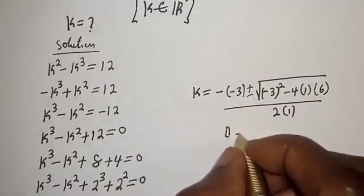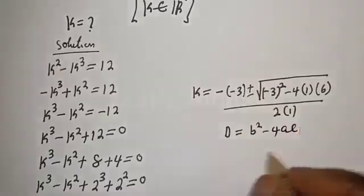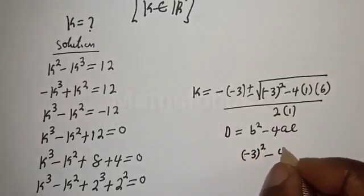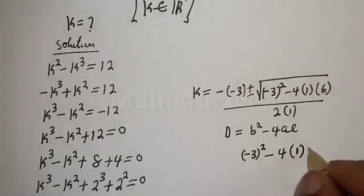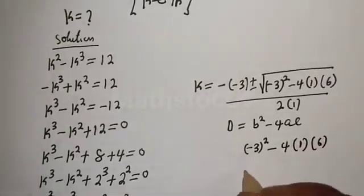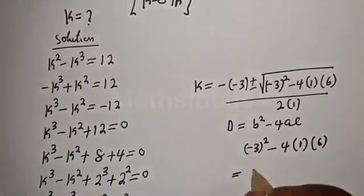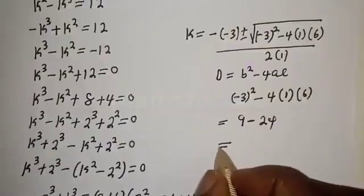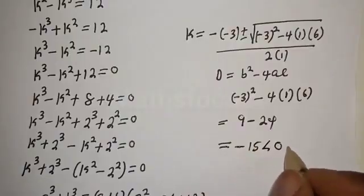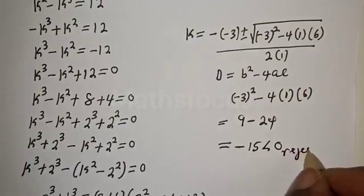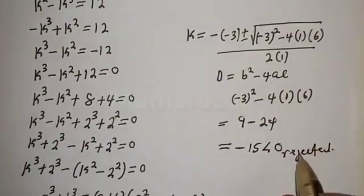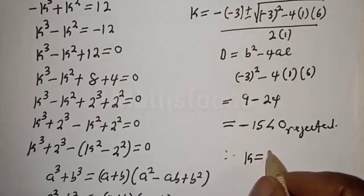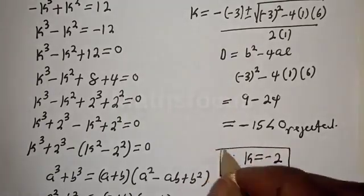The discriminant is equal to b squared minus 4ac. Then b is minus 3 squared minus 4 multiplied by 1 and 6. This is equal to 9 minus 24, equal to minus 15, and this is less than 0. So this is rejected because there is no real solution here. Therefore the only solution we have is k equal to minus 2. This is the final answer.